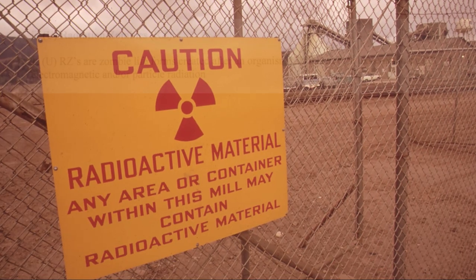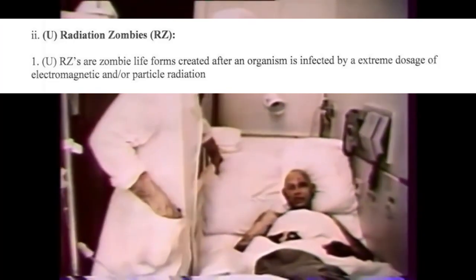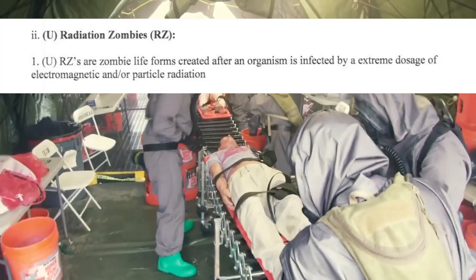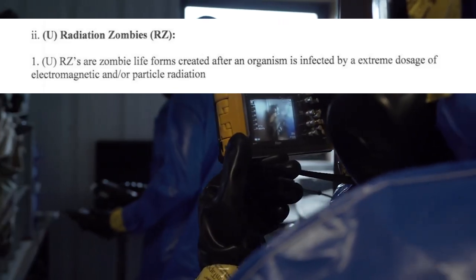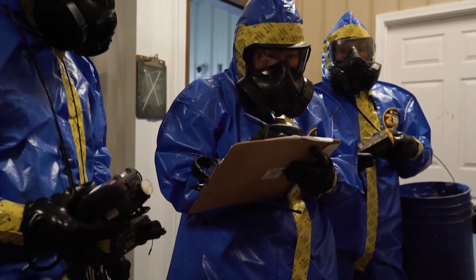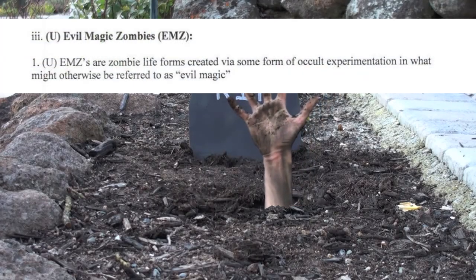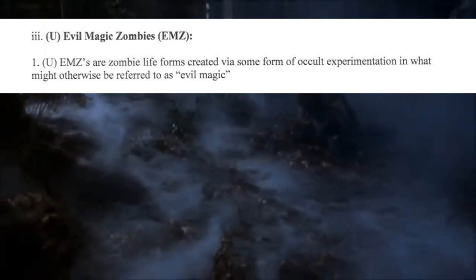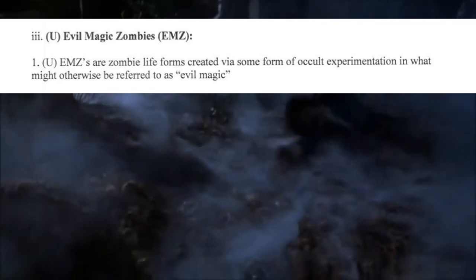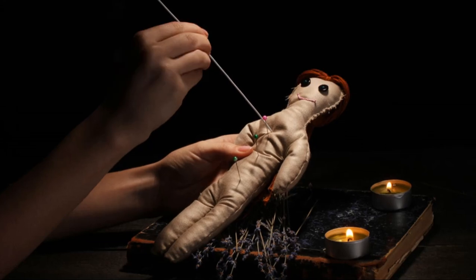Radiation zombies, RZ, are zombie lifeforms created after an organism is impacted by an extreme dosage of electromagnetic and/or particle radiation. Evil magic zombies, EMZ, are zombie lifeforms created via some form of occult experimentation in what might otherwise be referred to as evil magic.